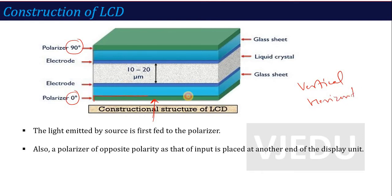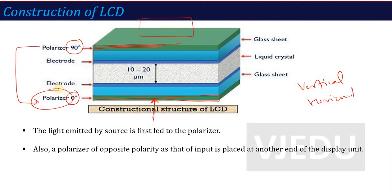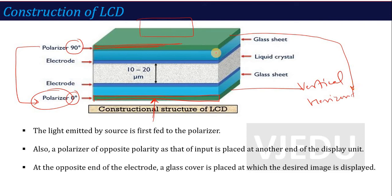The first polarizer where your light is incident is called the vertical polarizer. If this is a vertical polarizer, then at the output end where your image is produced, there is also a polarizer sheet. This polarizer has the opposite polarity of the input polarizer — so if there is a vertical polarizer at input, then the output polarizer will be 90 degrees rotated, or a horizontal polarizer. At the last of the construction, we place a glass cover.